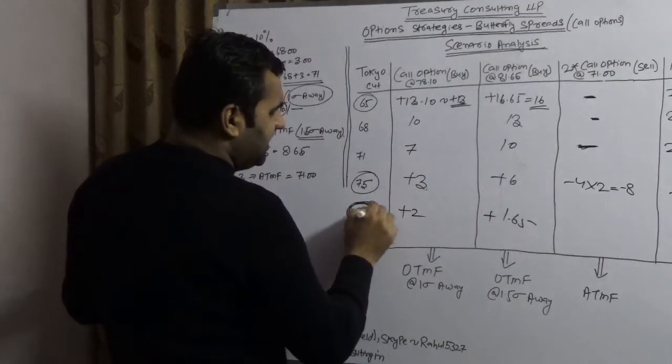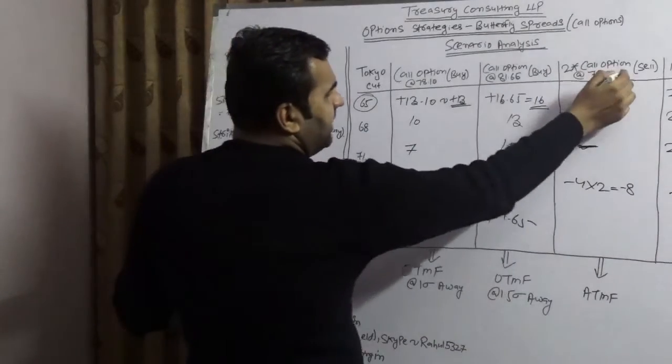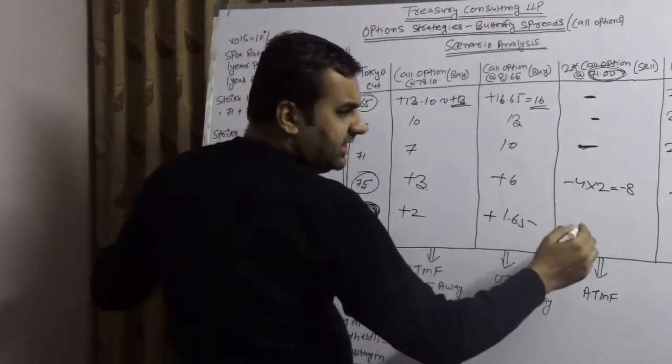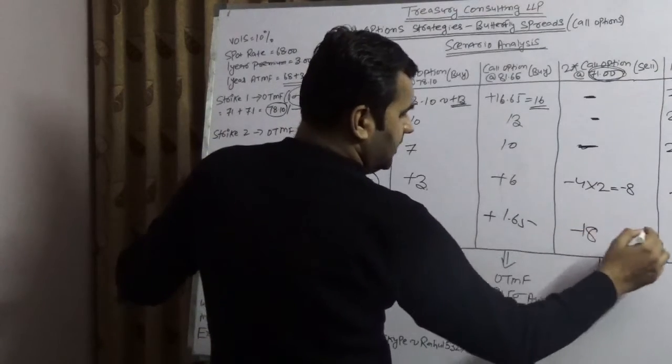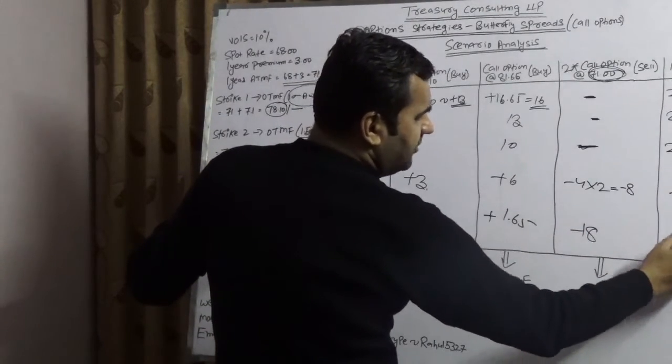Here somebody is having a right to buy at 71. So there is a net loss of 18 rupees here. So you would have net loss of 15 rupees here.